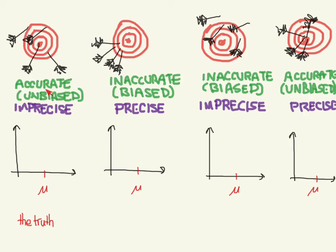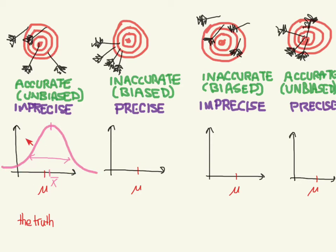So let's first look at something that is accurate but imprecise. This sample here has a mean which is pretty close to mu, so we would say that it's accurate. However, it is so widely dispersed, and so we say that it is imprecise because it's not clustered together well. So it's close to the truth — accurate — but imprecise because it's so widely dispersed.